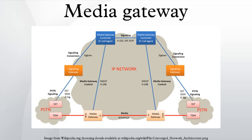Mobile access media gateways connect the radio access networks of a public land mobile network (PLMN) to a next-generation core network. 3GPP standards define the functionality of CSMGW and IMSMGW for UTRAN and GERAN based PLMNs.